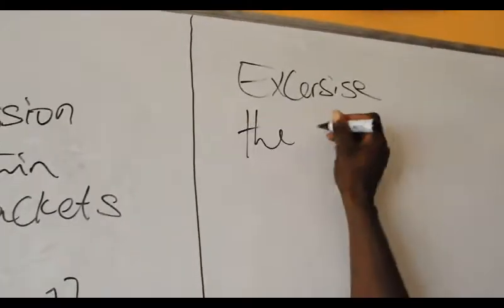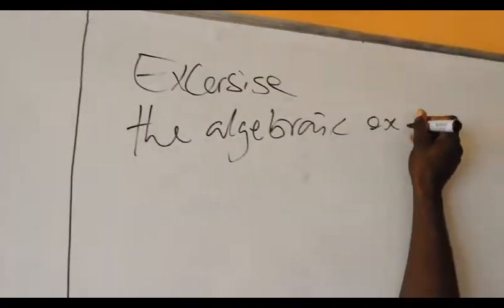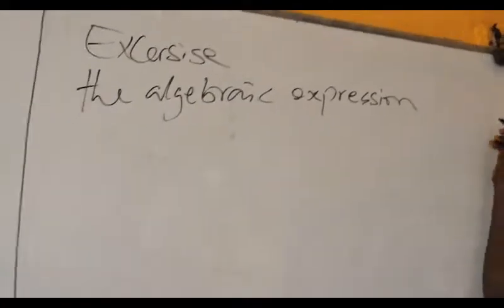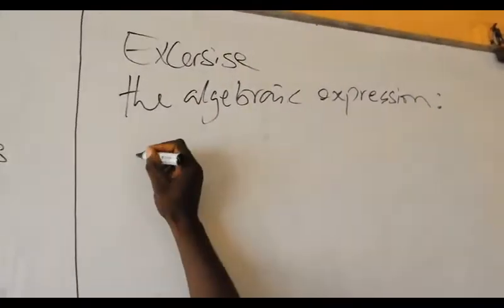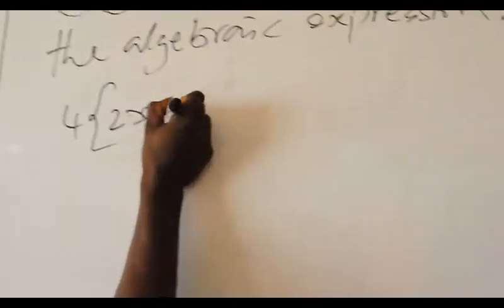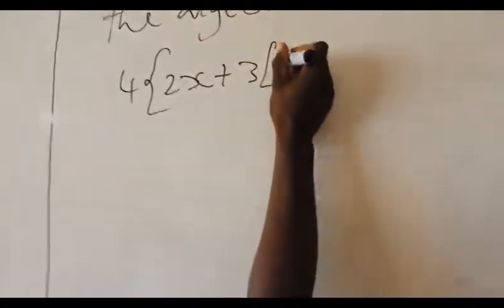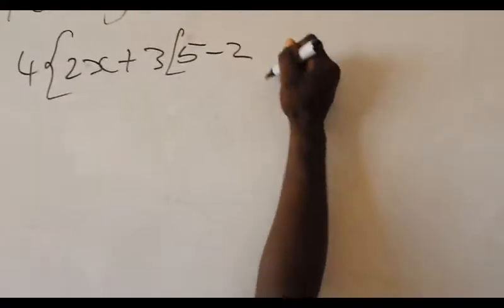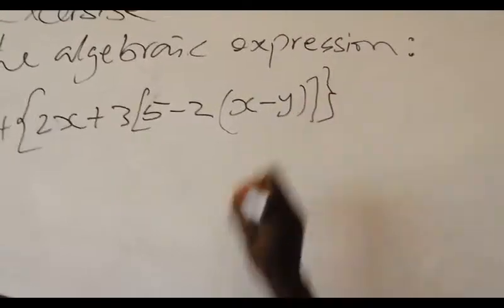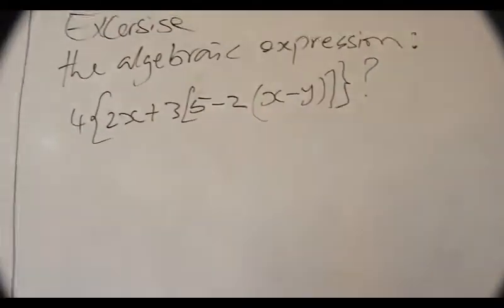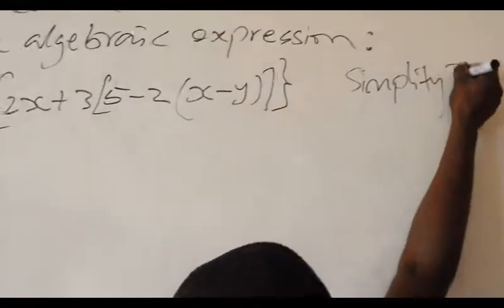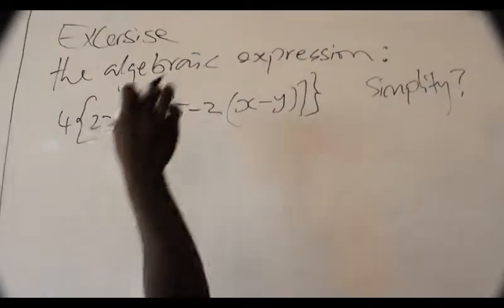Now here is the algebraic expression for the second example: 4 into 2X plus 3, then 5 minus 2 into X minus Y. We have to simplify this. We take the innermost bracket first.